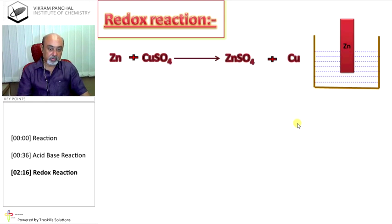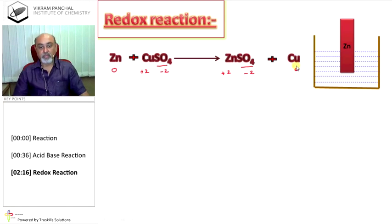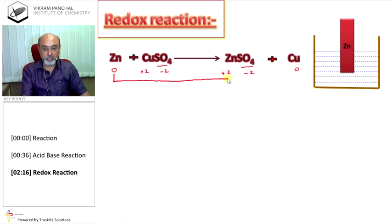Oxidation number of zinc is 0. Valency of SO4 is minus 2. Therefore, copper is plus 2. SO4 on the right-hand side is minus 2. Therefore, zinc plus 2 and copper 0. So, here you can see oxidation number of zinc changes from 0 to plus 2 and oxidation number of copper changes from plus 2 to 0.